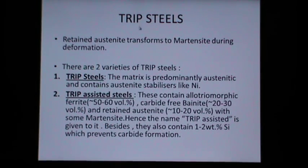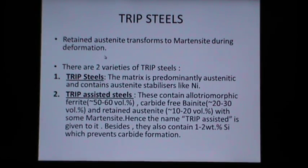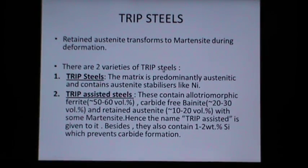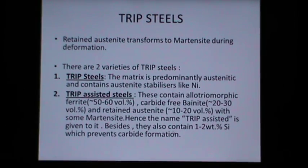In TRIP steels, retained austenite transforms to martensite during deformation. There are basically two varieties of TRIP steels. The first variety is the TRIP steel in which the matrix is predominantly austenitic and contains austenite stabilizers.